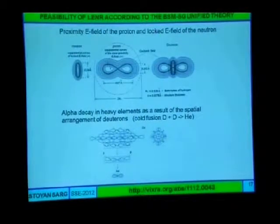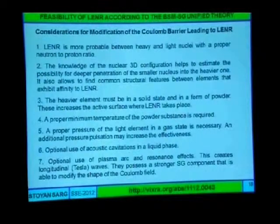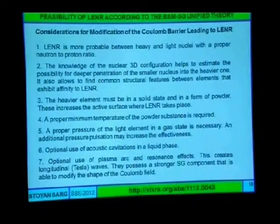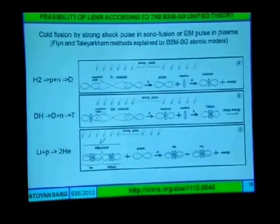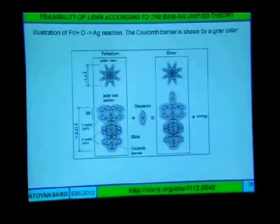Here is an example of the proximity field, the Coulomb field of the proton and neutron. Here is a consideration for modification of the Coulomb barrier leading to reactions. Here is an explanation by this model of some reactions — specifically reactions in palladium plus deuteron making silver. And here you see the Coulomb field makes a more complicated shape; it is not circular.